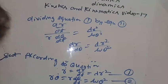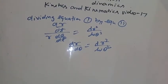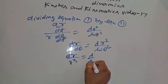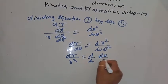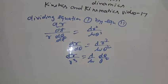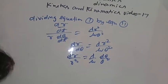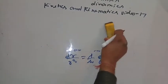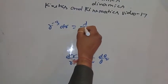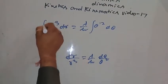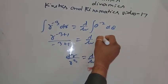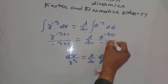Now separating this, r goes to the other side. It becomes dr upon r cubed equal to lambda upon mu d theta upon theta squared.